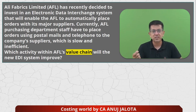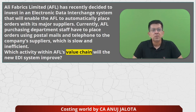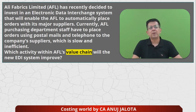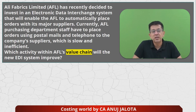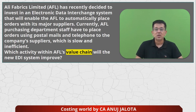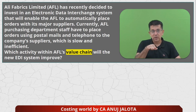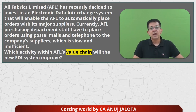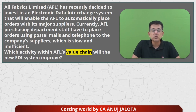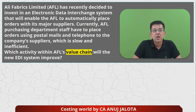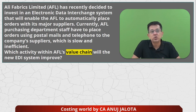Currently, AFL's purchasing department staff has to place orders using postal mail — literally putting orders in envelopes and couriering them — and telephones to the company suppliers, which is slow and inefficient. This is obviously a manual process. The question is: which activity in AFL's value chain will the new EDI system improve?